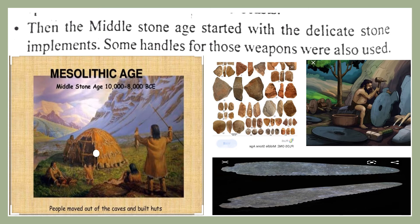People fixed these small stone tools with handles made out of wood and bones, and used those tools as axes and saws. Along with these tools, tools of the old kind also continued to be used — the tools from the Old Stone Age were still used in the Middle Stone Age as well.